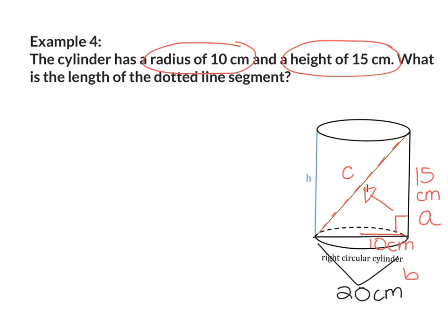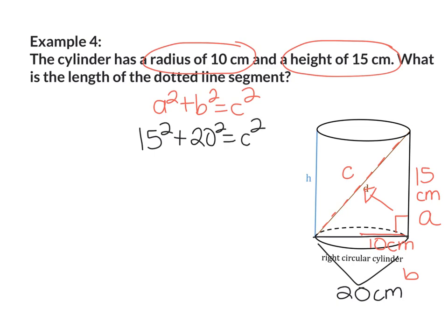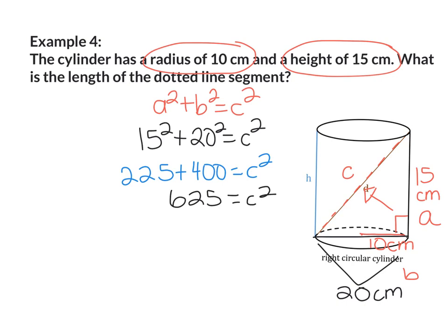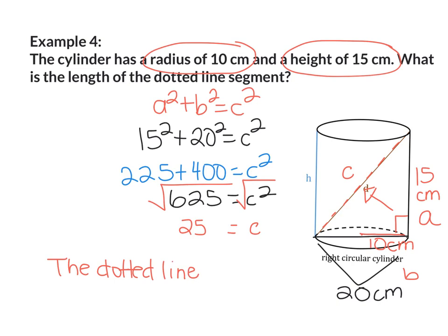Writing the formula: A squared plus B squared equals C squared. Plugging in: 15 squared plus 20 squared equals C squared. 15 squared is 225, and 20 squared is 400. 400 plus 225 is 625, so 625 equals C squared. Taking the square root of both sides, the square root of 625 is 25. So the dotted line is 25 centimeters.